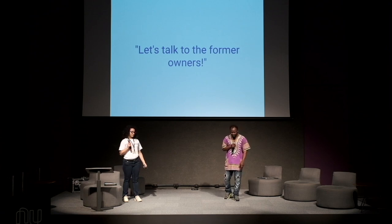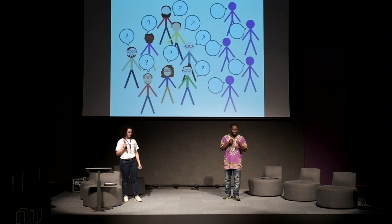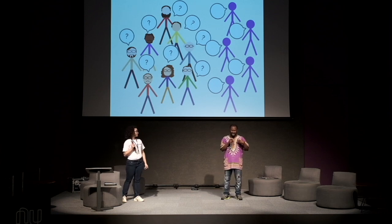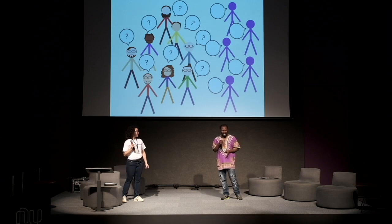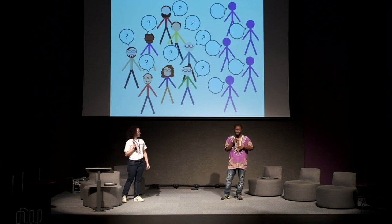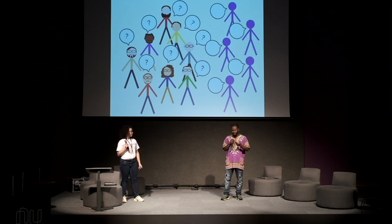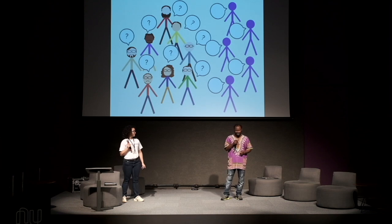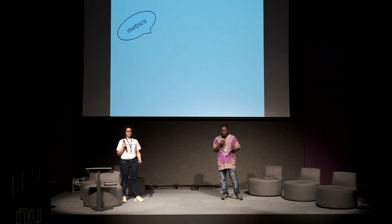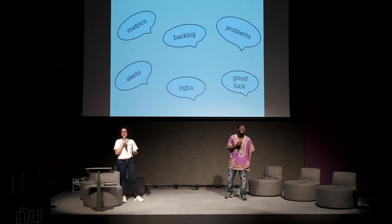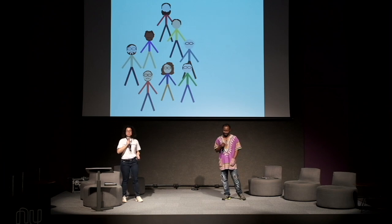In the meeting with the former owners, we asked a lot of questions and they provided valuable information — like why those monsters were created, what they do, and if there's anything we should know about them. Everyone has secrets: things you shouldn't do because if you do, the little monster is going to freak out and start spreading chaos. They also gave us a set of artifacts to help us in our journey: metrics, alerts, backlog, known problems, and good luck.